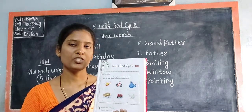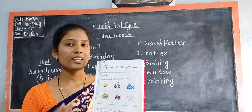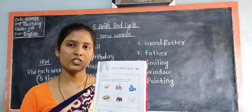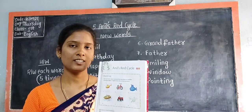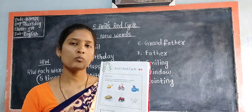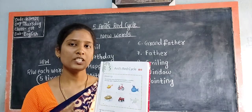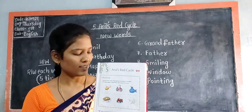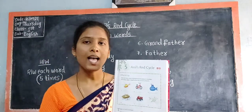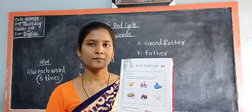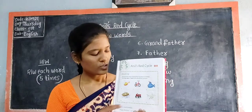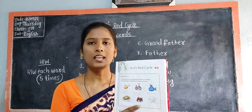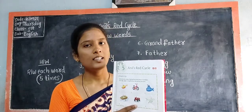Look at the fifth picture children. What can you see in the fifth picture? The fifth picture is of a tractor. So how does a tractor move from one place to another — sky, water, or land? Land. So write land in the blank: L-A-N-D. Land.